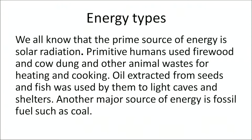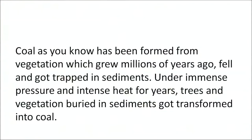The next important natural resource shaping human society is energy. The primitive source of energy is solar radiation. Primitive humans used firewood, cow dung, and other animal waste for heating and cooking. Oil extracted from seeds and fish was used to light caves and shelters. Another major source of energy is fossil fuel such as coal, which has been formed from vegetation that grew millions of years ago, fell and got trapped in sediments, and under immense pressure and intense heat was transformed into coal.